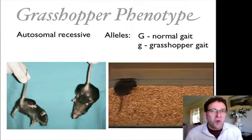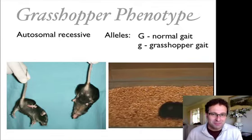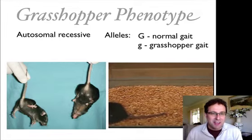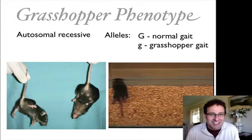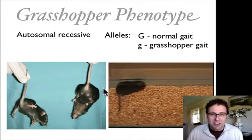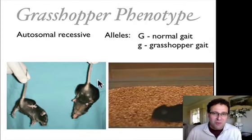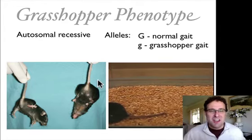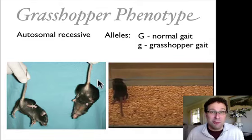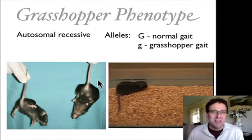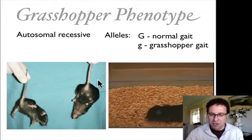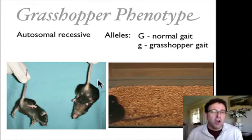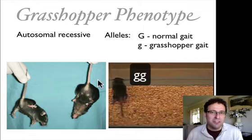Let me introduce you to one mouse phenotype. This is called the grasshopper phenotype. It's called the grasshopper phenotype because if you pick one of these mice up by the tail it'll alternately kick its legs apart and then clench them together, and when they walk — you'll see if you have a look at this mouse over here — they lift their legs higher than a normal mouse would. They have this sort of strange bounding gait which looks a little bit grasshopper-ish. These mice have an autosomal recessive phenotype; in order to have the grasshopper phenotype a mouse would have to be homozygous for the little g allele.